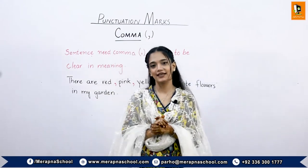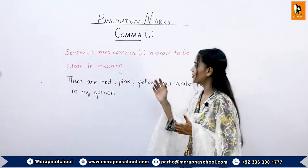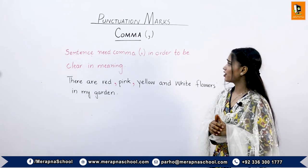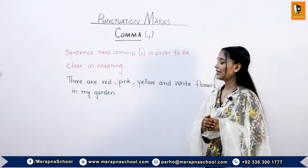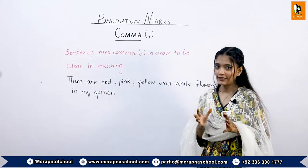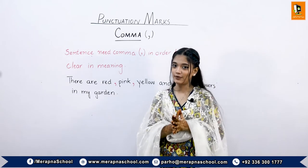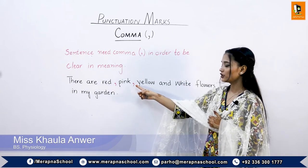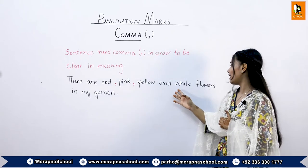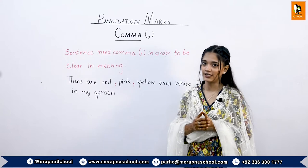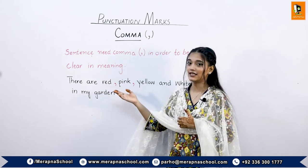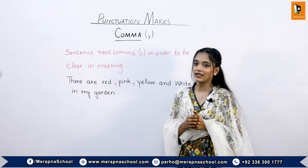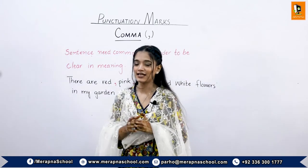Now we are going to start the next punctuation mark, which is the comma. Sentences need commas in order to be clear in meaning. To make a sentence clear we need a comma. For example, in the sentence 'There are red, pink, yellow, and white flowers in my garden,' if you don't put commas, the sentence would not be clear in meaning.